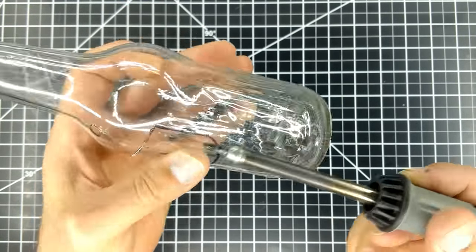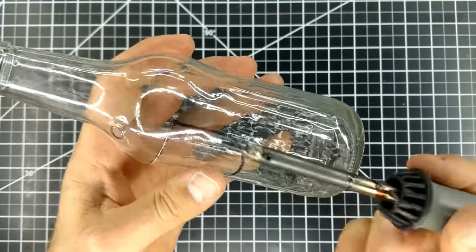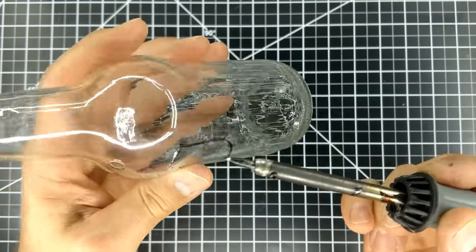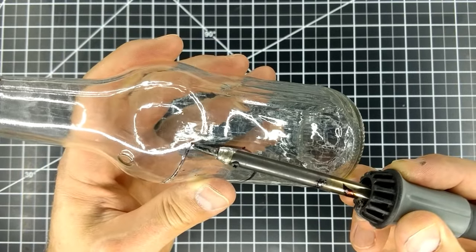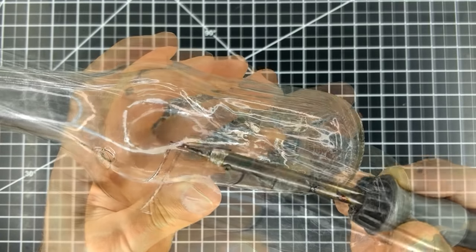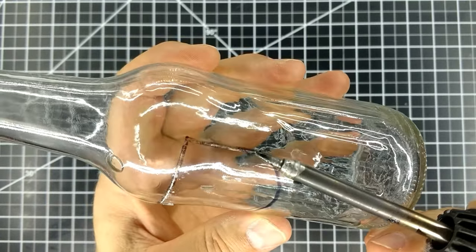When you get to the corner, move the soldering iron to follow the path you want the crack to go. If it's not too much of an angle, the crack will follow the tip without much trouble. The same goes for any curves you want the crack to follow.